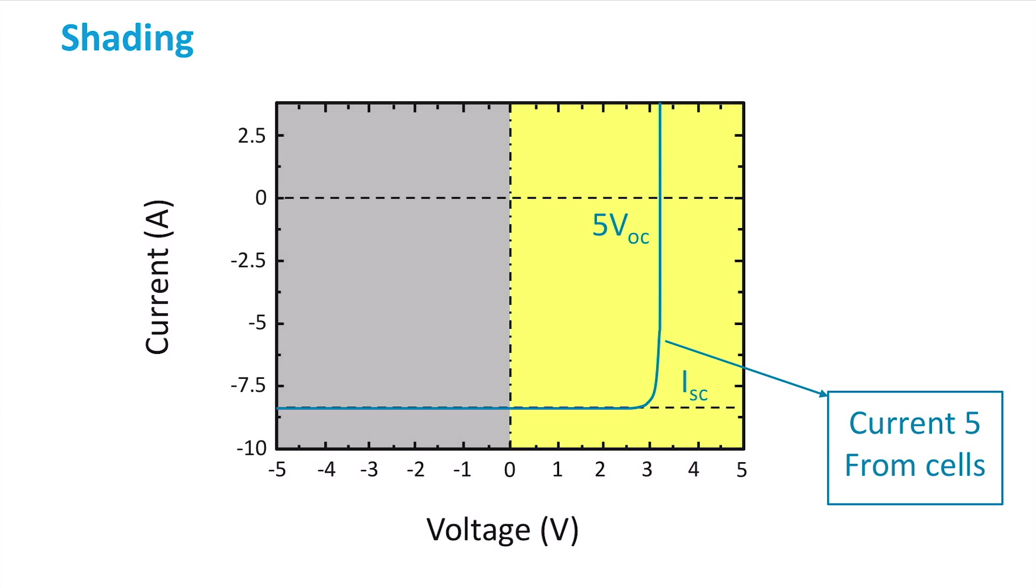This graph shows the theoretical IV curve of the five non-shaded cells in series, adding to a total of 5 times VOC. The shaded cell will produce less current than the other five cells, therefore it will have a lower short-circuit current. For simplicity, we will assume that the open-circuit voltage of the shaded cell is unaffected. In this example, we had a constant load R.